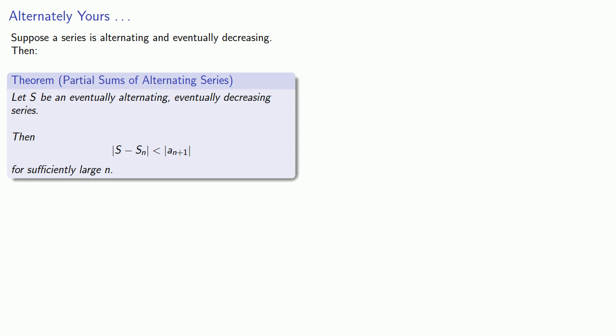So this s without a subscript indicates the sum of the series. Then the difference between s and the nth partial sum is going to be less than the n plus first term, for a sufficiently large n. And the way you can think about it is that the partial sum of an alternating decreasing series is accurate to within the first excluded term.